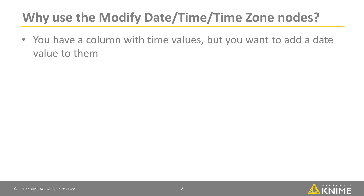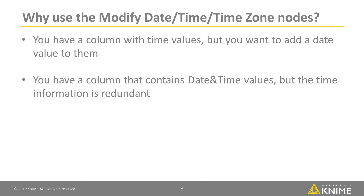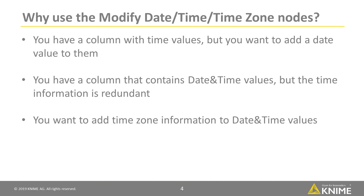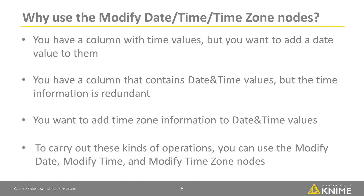You have a column with time values, but you want to add a date value to them. You have a column that contains date and time values, but the time information is redundant. Or you want to be able to add time zone information to date and time values. To carry out these kinds of operations, you can use the modify date, modify time, and modify time zone nodes.